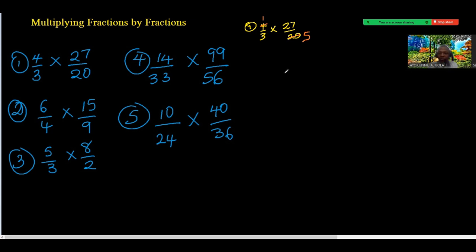I have 3 at the bottom and 27 at the top, so I can still use 3. 3 into 3 is 1 and 3 into 27 is 9. So what I have at the top now is 1 times 9 which is 9, and at the bottom is 1 times 5 which is 5. This is an improper fraction, so how many 5s are in 9? That's 1 remainder 4 over 5.